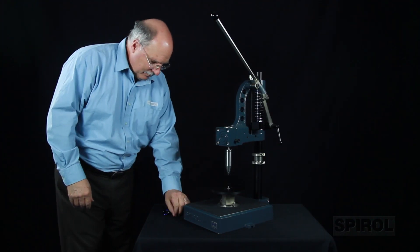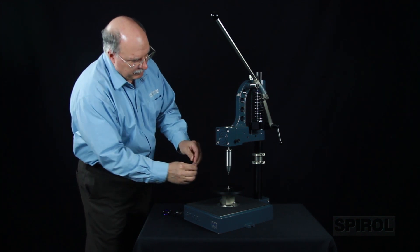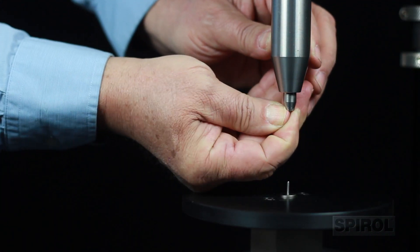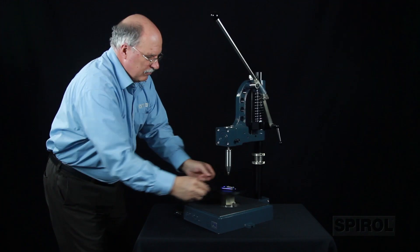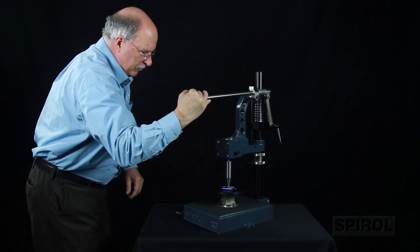To operate this machine, the operator loads the fastener into the tool, loads the part into the fixture, and pulls the handle until the product is fully installed.